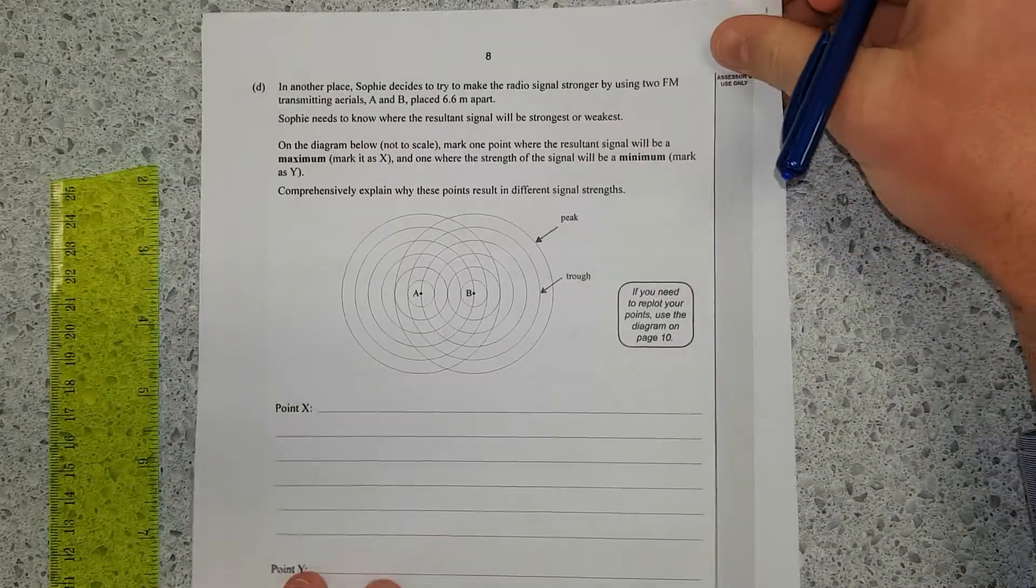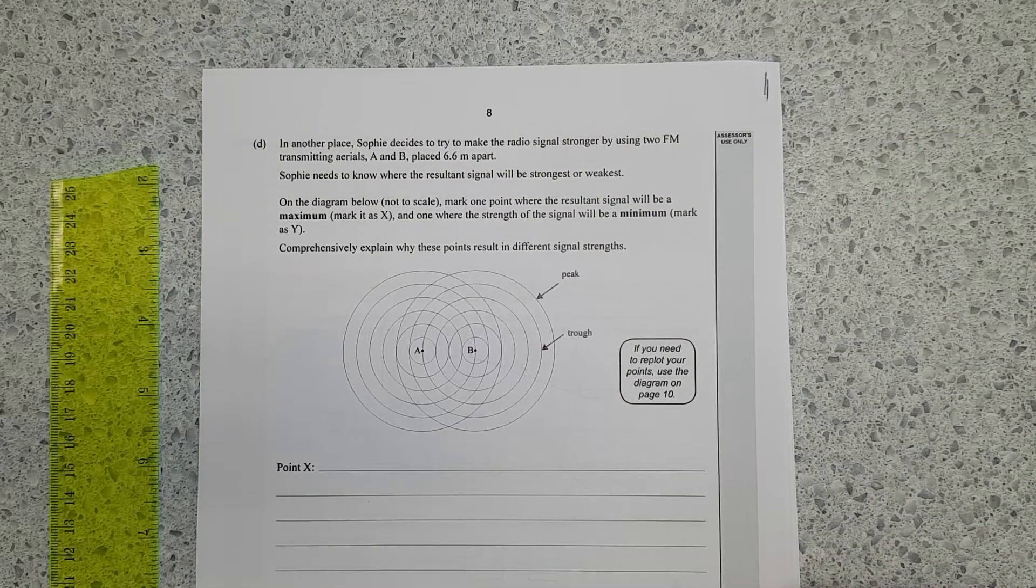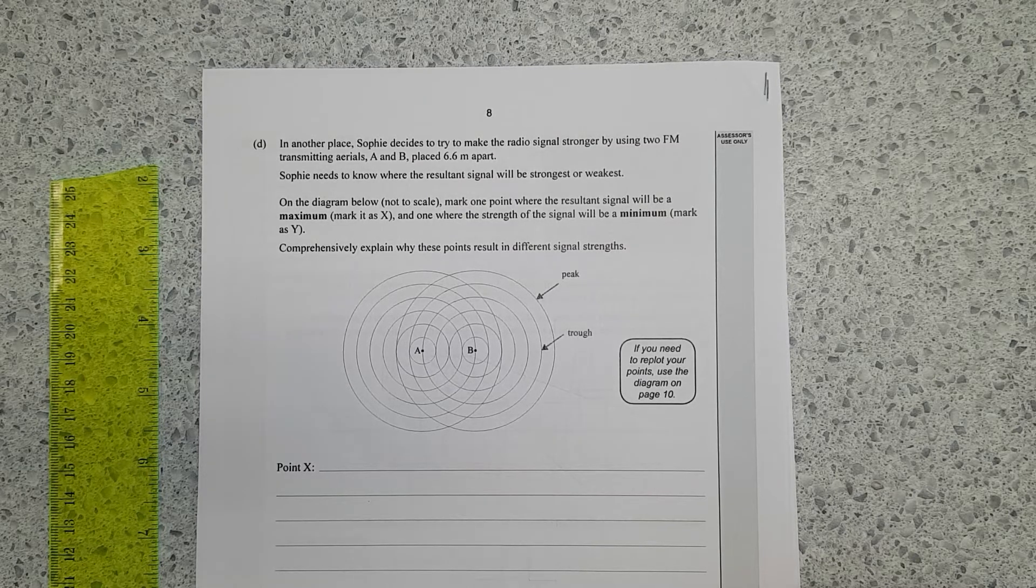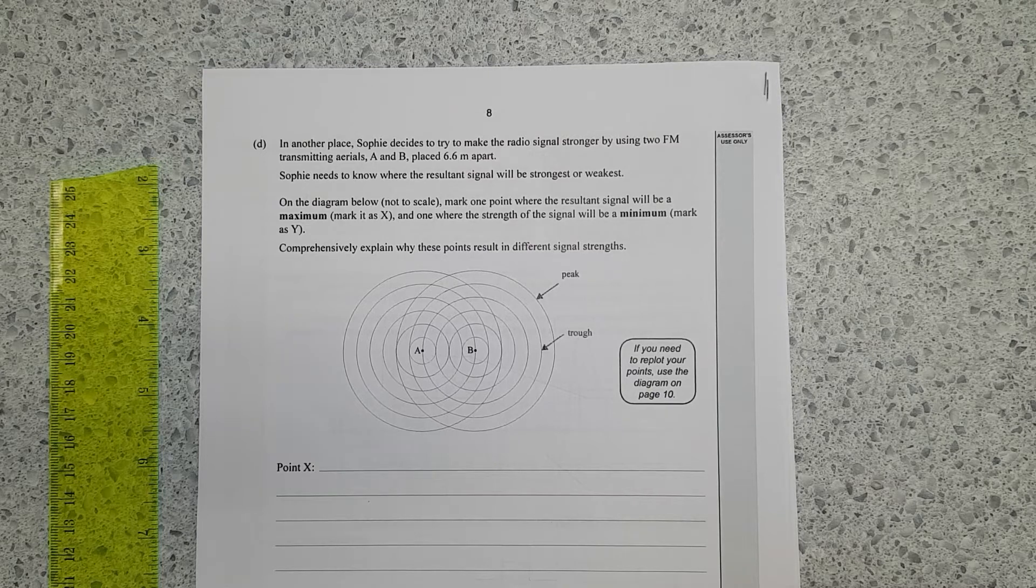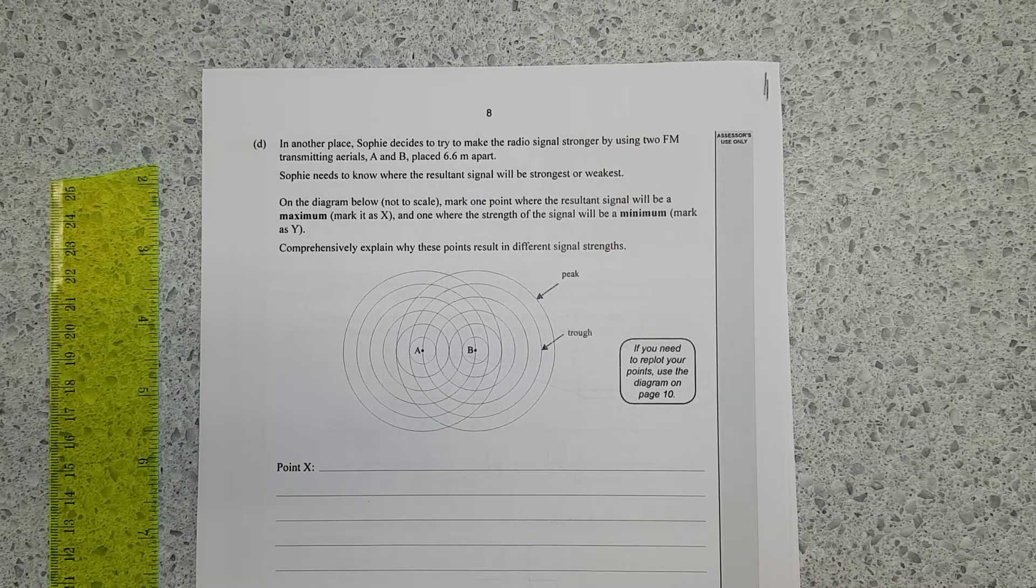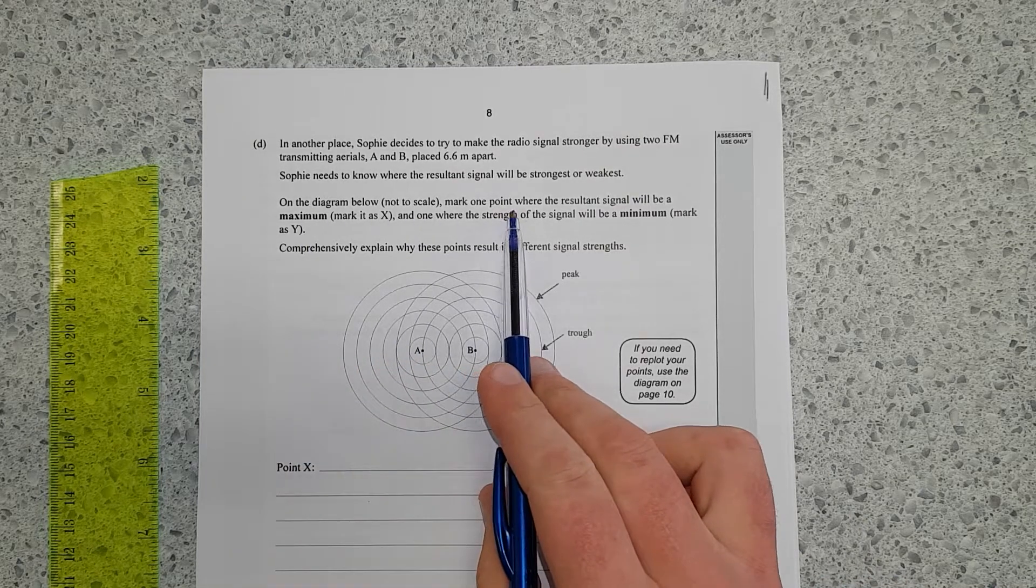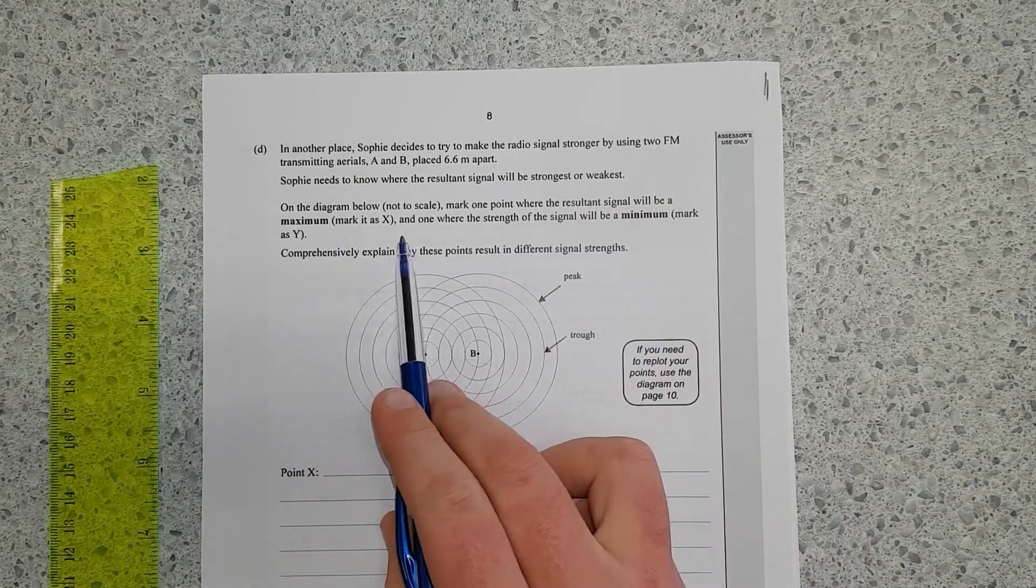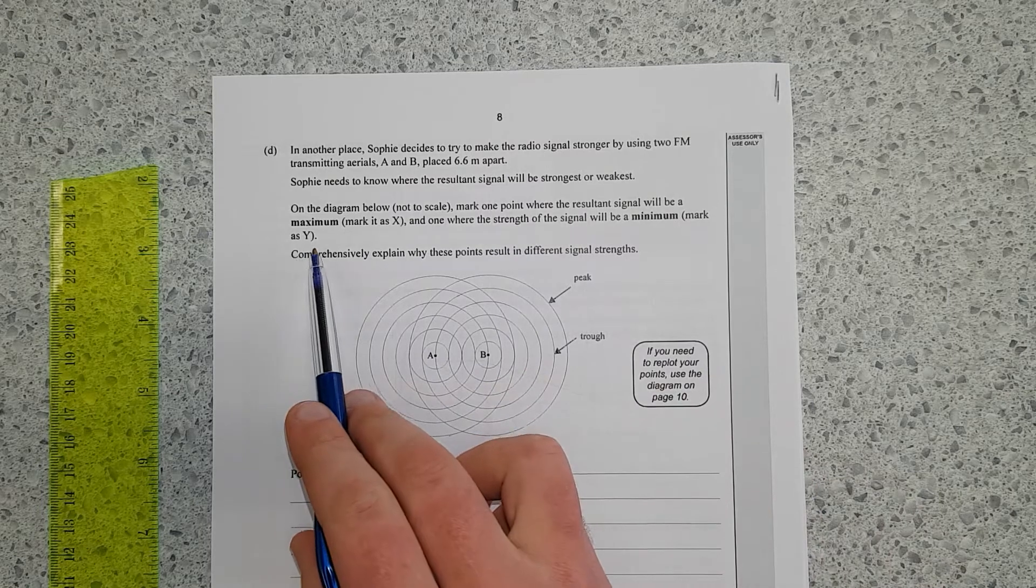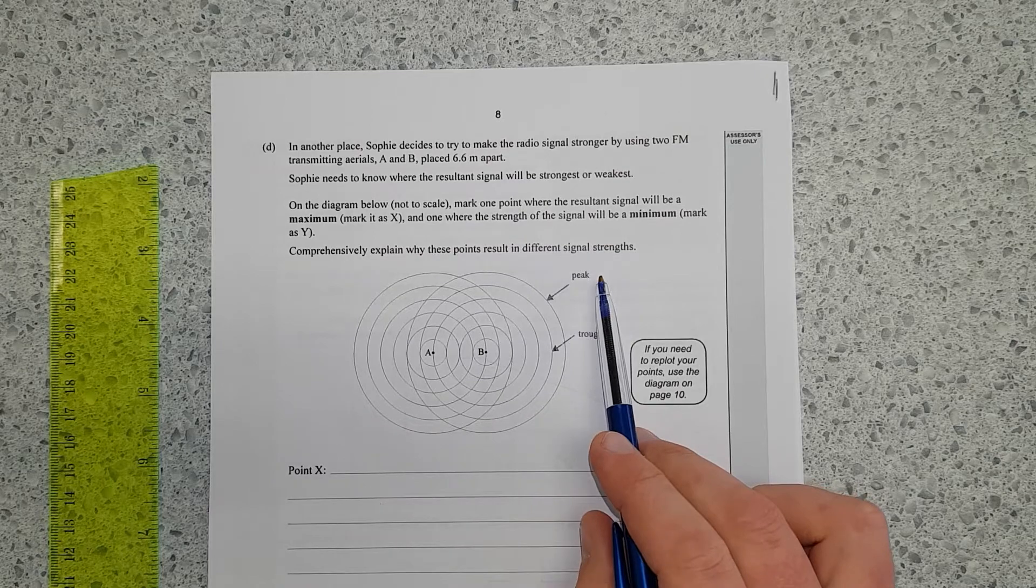Last question. In another place, Sophie decides to try and make the radio signal strength stronger by using two FM transmitter aerials, A and B, placed 6.6 meters apart. Sophie needs to know where the resultant signal will be strongest or weakest. On the diagram below, not to scale, mark one point where the resultant signal will be a maximum. That'll be the anti-node. And where it'll be the minimum, that'll be the node. Comprehensively explain why these points result in different strength signals.